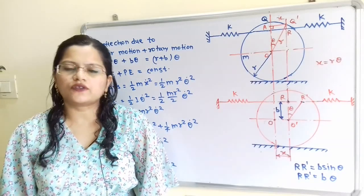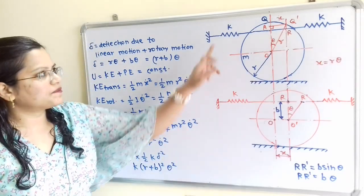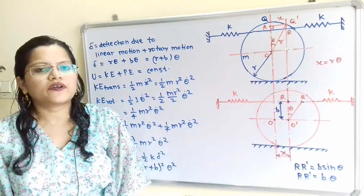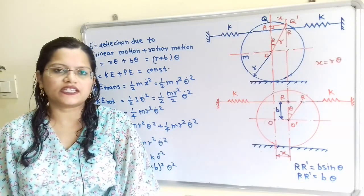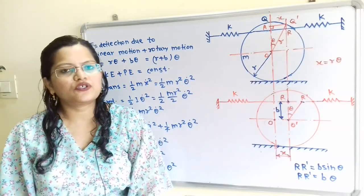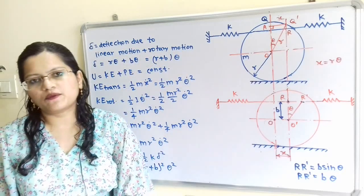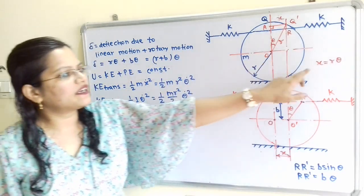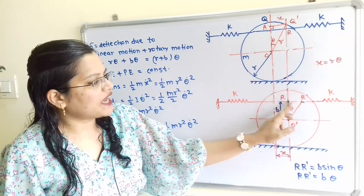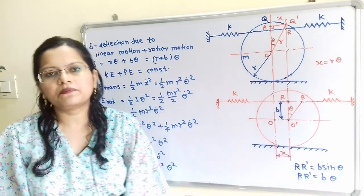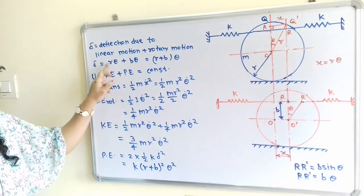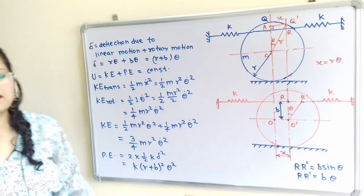When the cylinder rolls on a fixed support, the amount by which the first spring is stretched equals the amount by which the second spring is compressed. We define deflection delta in each spring as the sum of linear motion and rotary motion contributions. Linear displacement gives R·theta, and rotary motion gives B·theta. So delta = R·theta + B·theta = (R + B)·theta.